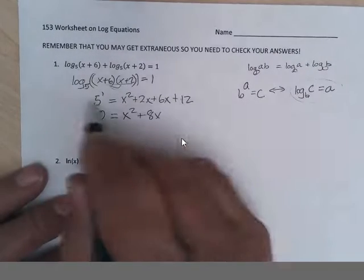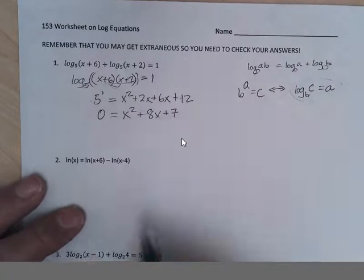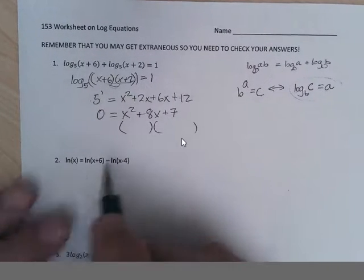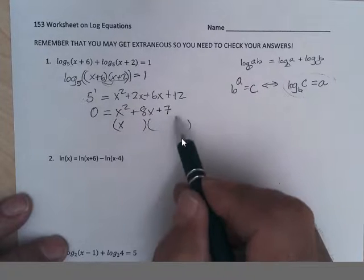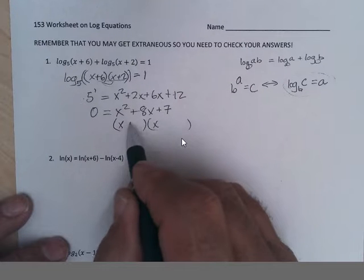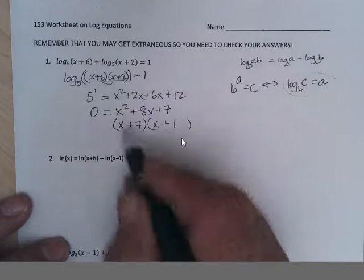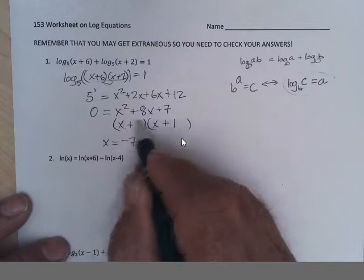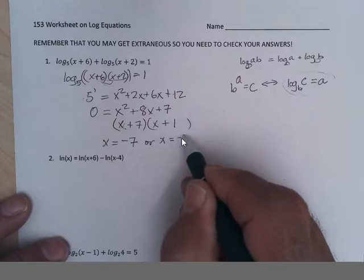Subtracting 5 from both sides, I get 0 equals x squared plus 8x plus 7. That factors to x plus 7 and x plus 1. So x equals negative 7 or x equals negative 1.